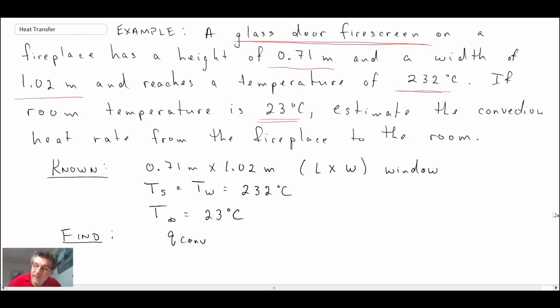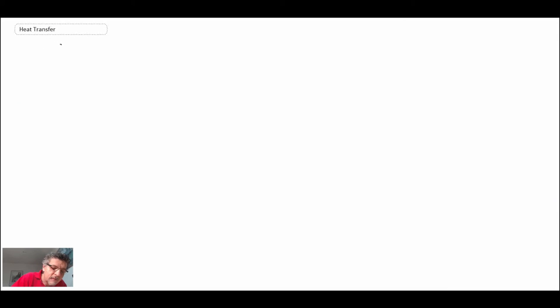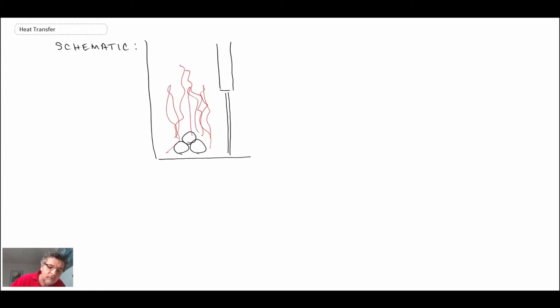Okay, so let's begin with a schematic of what we're looking at. Okay, so we have our fire. The surface temperature is TS, and we have the dimensions here. And this is where we have to be careful to make sure that we get the right dimension for the vertical extent or height. And so that is L, whenever we're dealing with a vertical flat plate with natural convection. And the width, we'll assign W, and that is 1.02 meters.